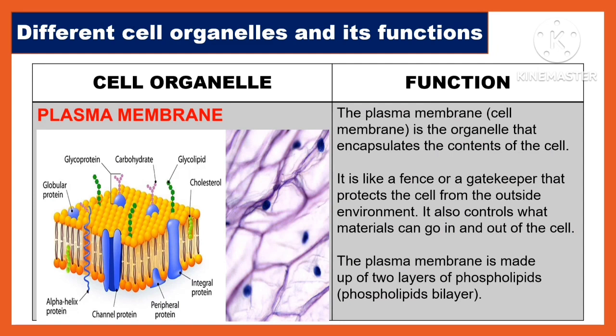Another cell organelle is the plasma membrane, also called the cell membrane. It is the organelle that encapsulates the contents of the cell, like a fence or gatekeeper that protects the cell from the outside environment. It also controls what materials can go in and out of the cell. The plasma membrane is made up of two layers of phospholipids — the phospholipid bilayer.